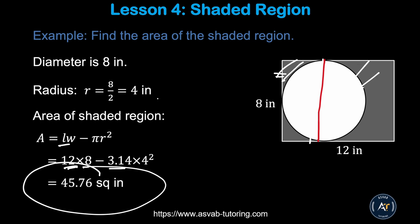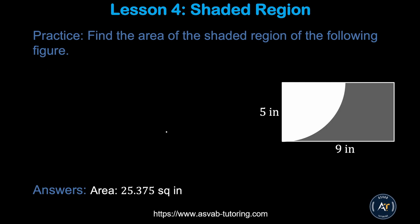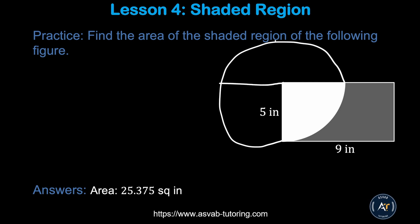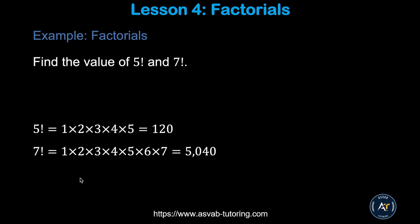In the next practice problem, you can see one quarter of a circle. First find the area of the circle whose radius is 5, then divide it by 4 because this is one of four sections. Then find the area of the rectangle and subtract it to get the shaded area. Try this by yourself.